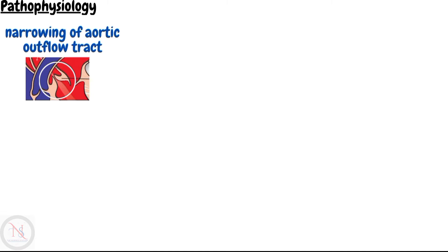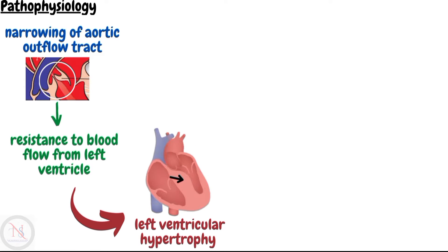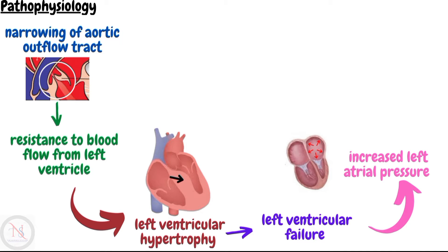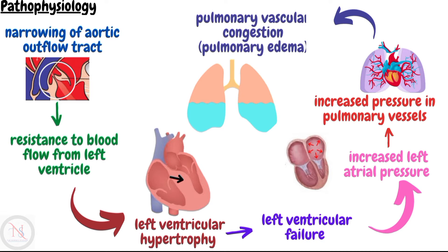Now we will discuss the pathophysiology of aortic stenosis. Due to narrowing of the aortic outflow tract, there is resistance to blood flow from the left ventricle. The left ventricle needs to work harder to push blood against increased resistance, which ultimately causes left ventricular hypertrophy. If left ventricular failure develops, left atrial pressure will increase, resulting in increased pressure in pulmonary veins, which leads to pulmonary vascular congestion and pulmonary edema.